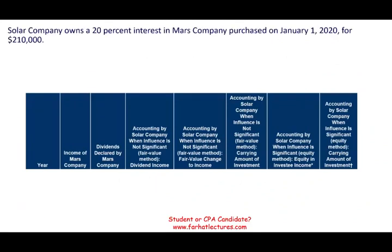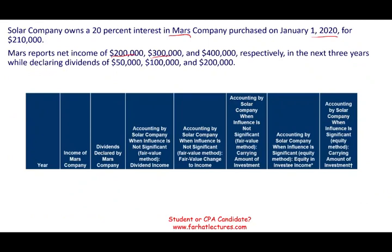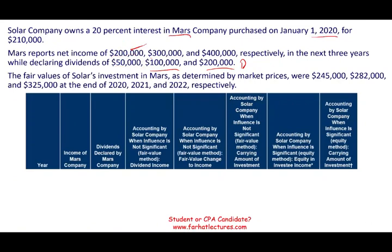The best way to learn this is to look at actual numbers. Let's assume Solar Company owns a 20% interest in Mars Company, purchased on January 1st for $210,000. Mars reported net income of $200,000, $300,000, and $400,000 respectively for years 2020, 2021, and 2022, while declaring dividends of $50,000, $100,000, and $200,000. The fair value of Solar Company's investment in Mars is $245,000 at end of 2020, $282,000 at end of 2021, and $325,000 at end of 2022.